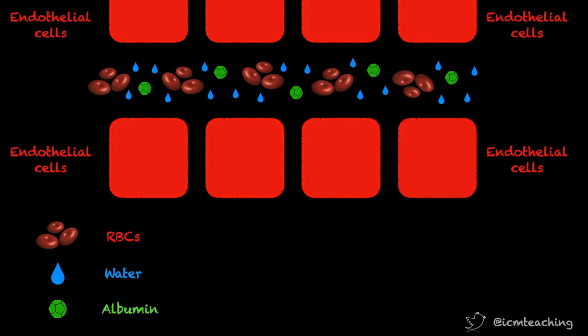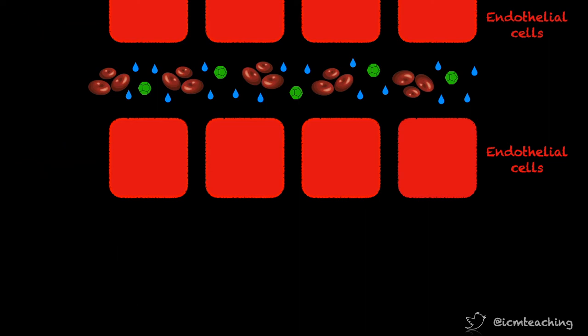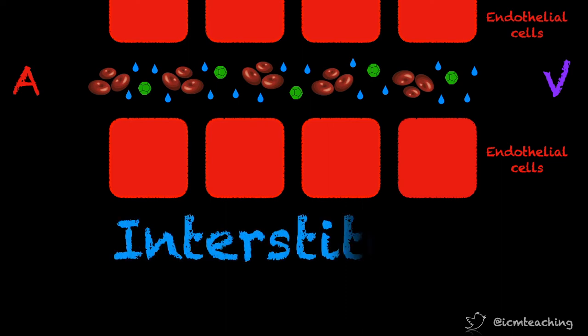In medical school I learned about the Starling model to explain fluid flow across capillaries. Here we have a capillary with red blood cells, water in blue and albumin in green. Capillaries have an arterial and venous end, and are lined with endothelial cells — the red squares here — with gaps in between them, with interstitial tissue on the other side. In muscle, connective tissue and the lungs, these gaps are frequent and large, and in the brain they're infrequent and small, which we know as the blood-brain barrier.